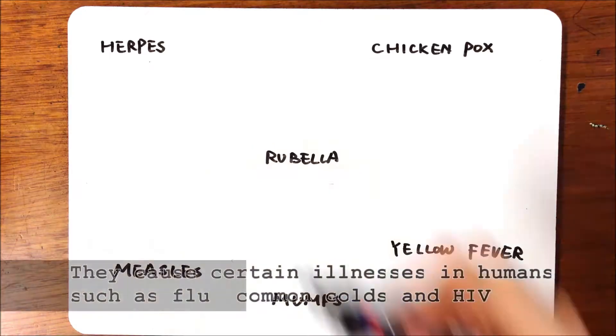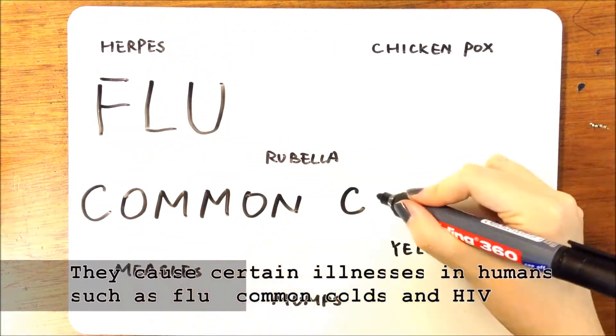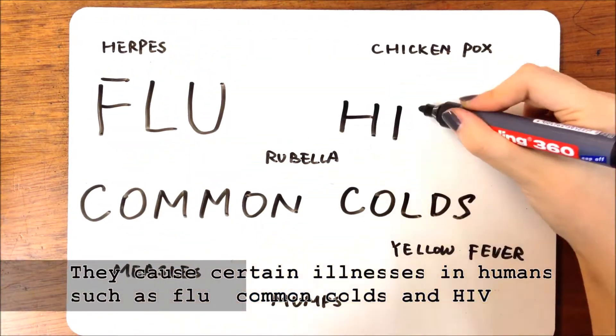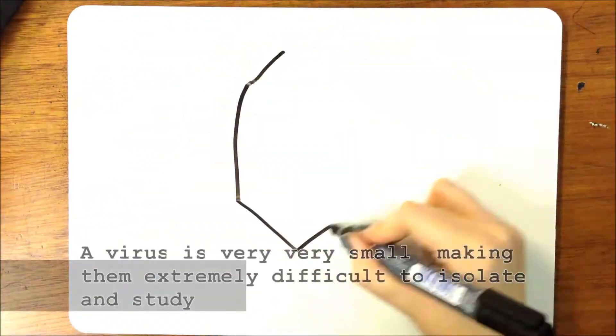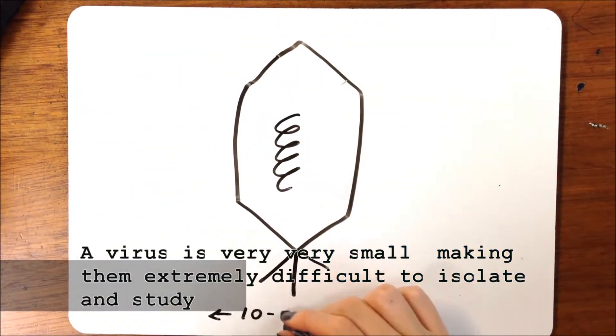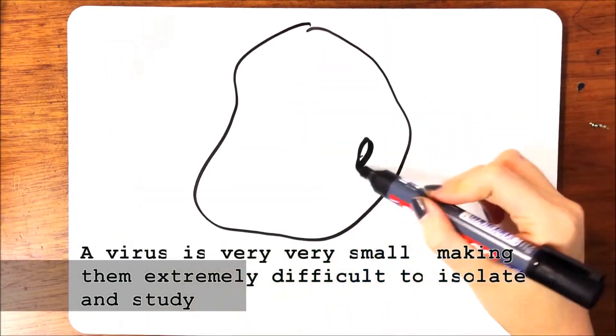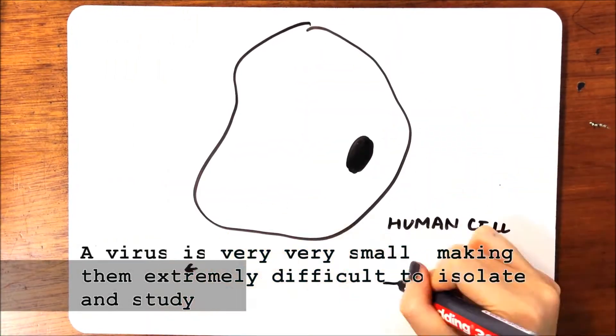They cause certain illnesses in humans, such as flu, common colds, and HIV. A virus is very, very small, making them extremely difficult to isolate and study.